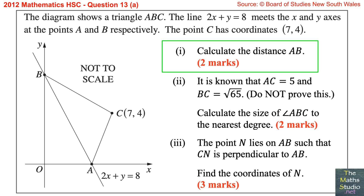Question 13, Part A. The diagram shows a triangle ABC. The line 2x plus y equals 8 meets the x and y axes at the points A and B respectively. The point C has coordinates 7 comma 4.